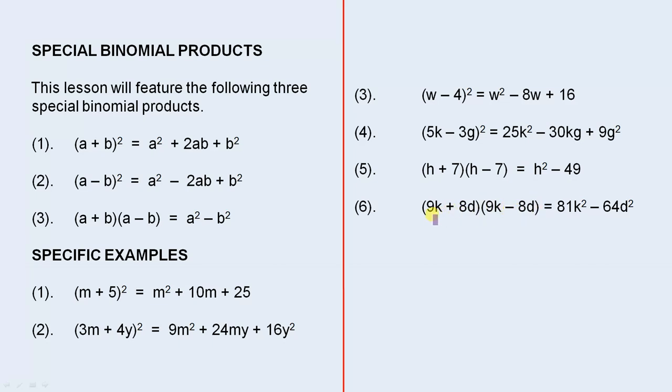And finally when you have again the product of a sum and difference, they're both the same terms, the only difference is the minus sign. You square the first term to give you 81k². You square the second term which gives you 64d², and you put a minus sign in between them.